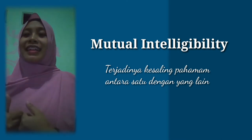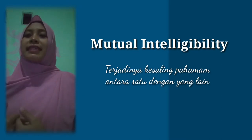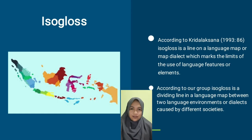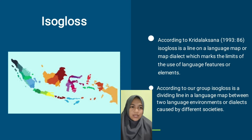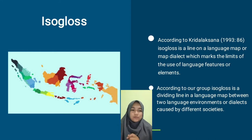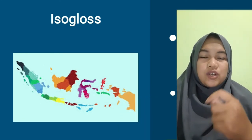That was my explanation about mutual intelligibility. Next, the explanation about isogloss will be presented by my friend Mela Oktaviani. According to Kridalaksana 1993, isogloss is a line on a language map or dialect map which marks the limits of the use of language features or elements. According to our group, isogloss is a dividing line in a language map between two language environments or dialects caused by different societies.